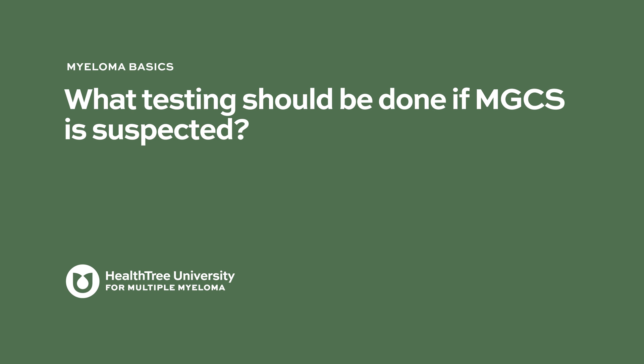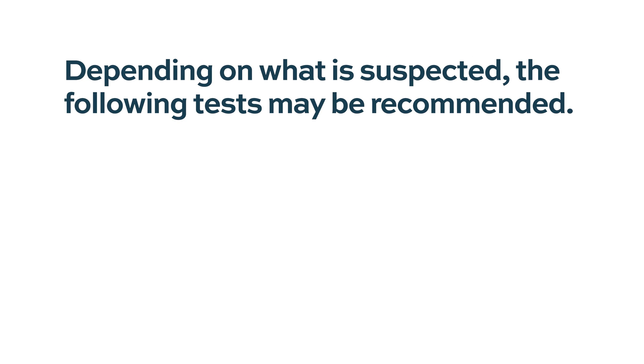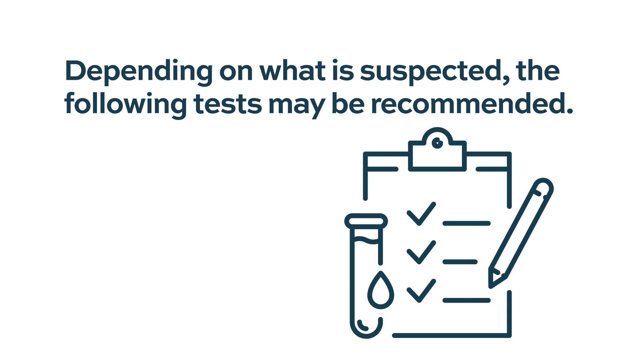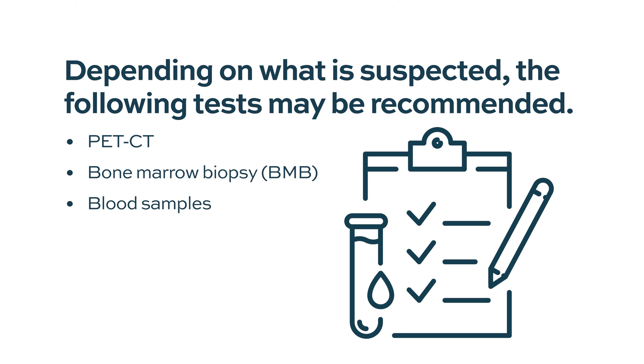Testing depends on what you suspect. Sometimes patients are not referred to our department. If you suspect a plasmacytoma that can cause neuropathy, for example, you need to do a PET-CT and also the normal workup with bone marrow and blood samples. You need a biopsy from the plasmacytoma if that's the case.